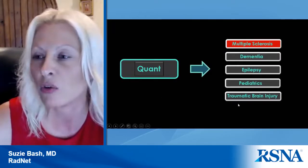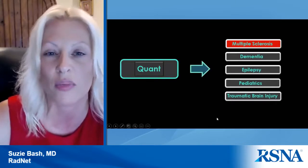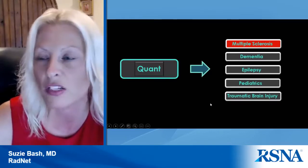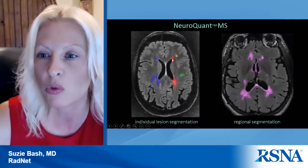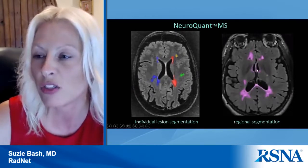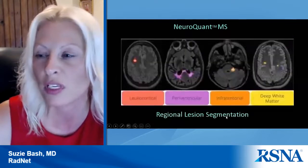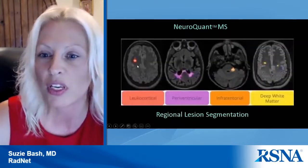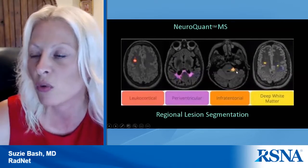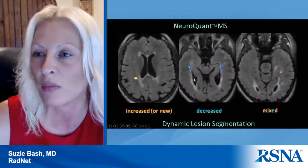Quantitative volumetric imaging is used for many different clinical diagnoses including multiple sclerosis, dementia, epilepsy, pediatrics, and traumatic brain injury. The great thing is that quantitative volumetric imaging can identify and quantitate individual plaques in the brain — individual lesion segmentation — and also allows regional segmentation. For example, periventricular plaques are shown in purple, leukocortical/juxtacortical plaques in red, infratentorial in orange, and deep white matter plaques in yellow. This happens to be the NeuroQuant package.